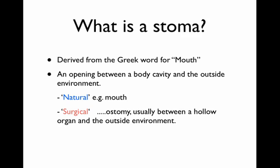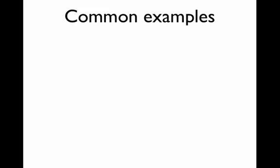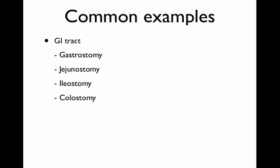An example would be a colostomy, where the ostomy refers to mouth and the colo refers to the colon. So some common examples. In terms of the GI tract, working from top to bottom, a common one would be a gastrostomy, communication between the stomach and the outside environment. Jejunostomy, here referring to the jejunum. Ileostomy, referring to the ileum. Colostomy, referring to the colon.